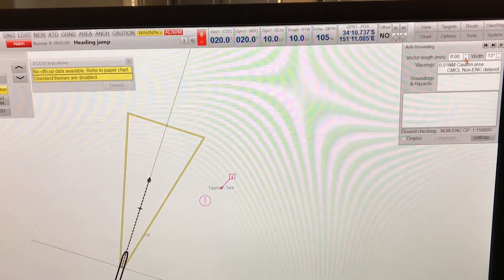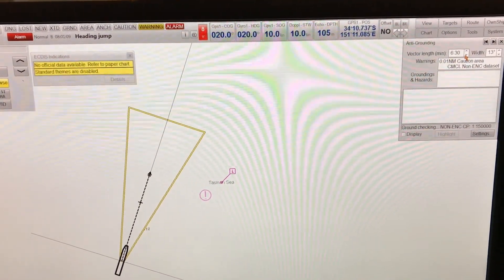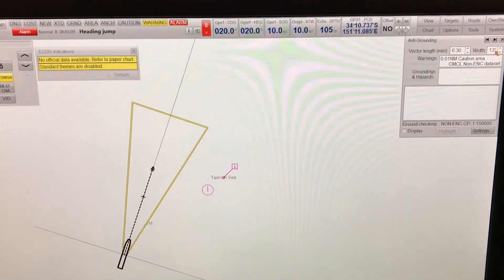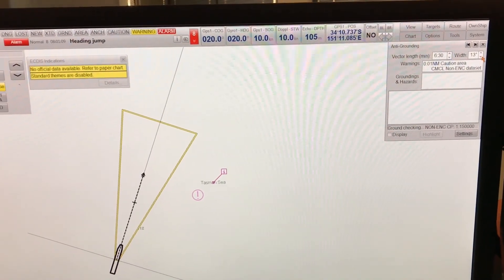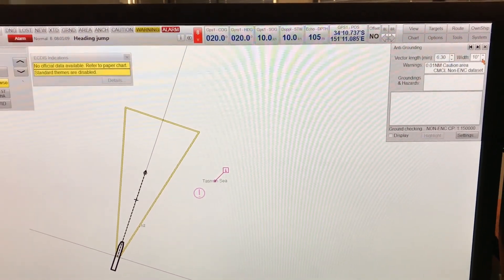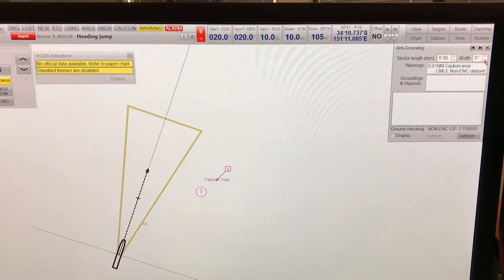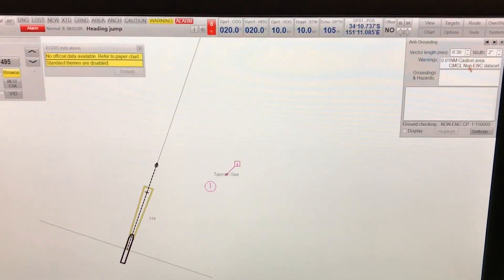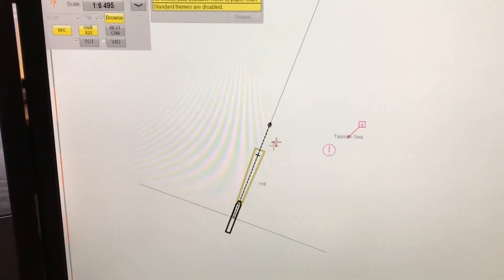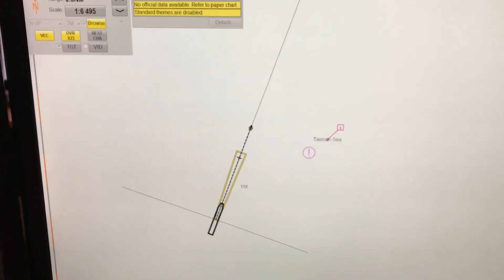Now I am reducing the vector length again. You can see immediately nothing is happening, it takes a bit of time, a few seconds. I have changed the width as well and again nothing has happened immediately. Give it a bit of time, be patient, and you will suddenly see the changes happen. So this is how you set the anti-grounding tool in your ECDIS systems.